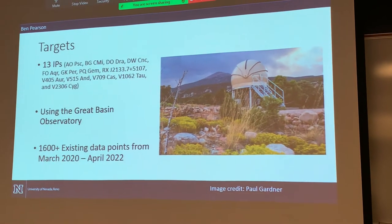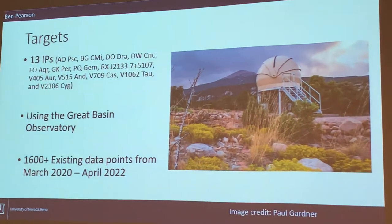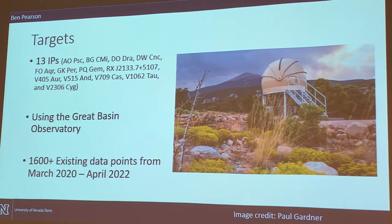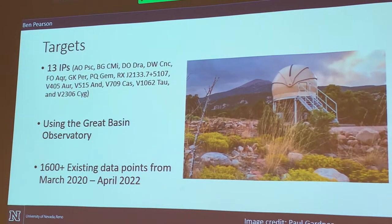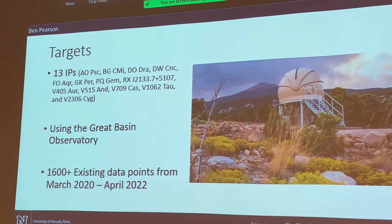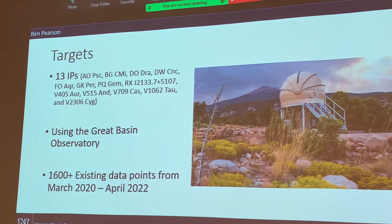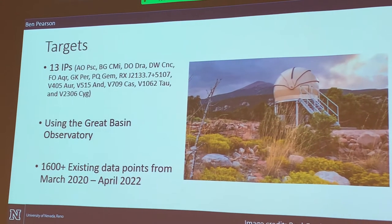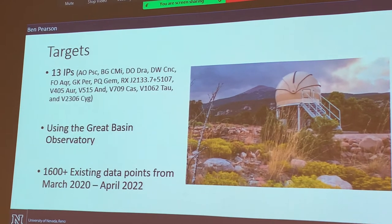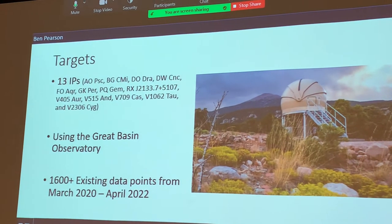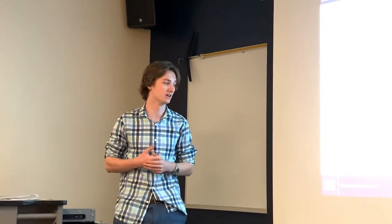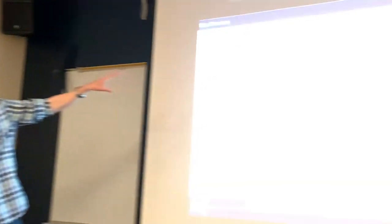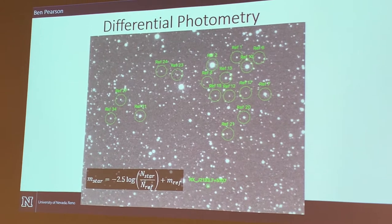Dr. Aaron Shaw proposed an observation with about 13 targets. The plan is to observe in visible spectrum using the Great Basin Observatory, then point an x-ray telescope at a target star should it undergo one of these dips in brightness. The Great Basin Observatory is in Great Basin National Park, a national dark sky zone. They had 1,600 existing data points from March 2020 to April 2022, with more coming in as this is an active observation. They need a method to properly analyze this, leading to differential photometry.